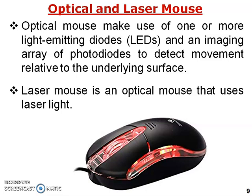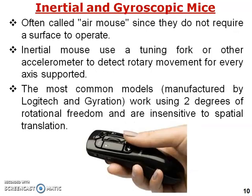Optical and laser mouse: an optical mouse makes use of one or more LEDs and an imaging array of photodiodes to detect movement relative to the underlying surface. A laser mouse is an optical mouse that uses laser light instead of an LED.